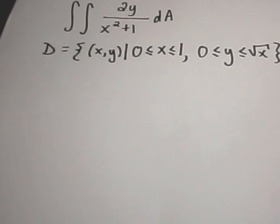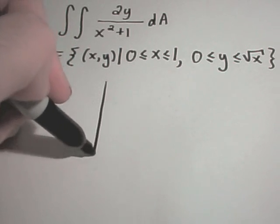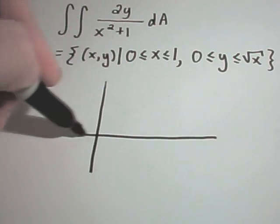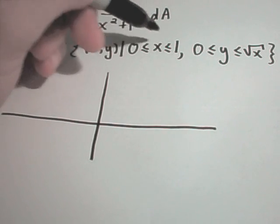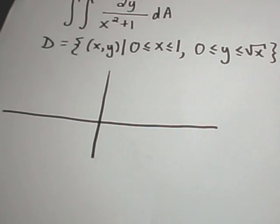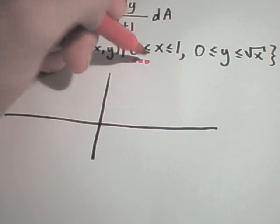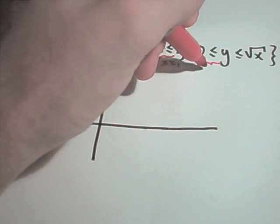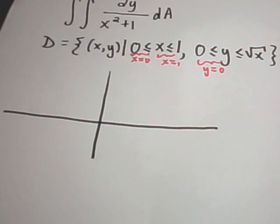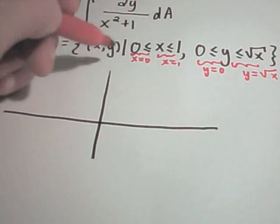The first thing you'll want to do in these problems is to simply sketch this region, because this is going to help you get your limits of integration. I usually think about x equals 0 and x equals 1 — I pretend they're not inequalities. So this gives me the line x equals 0 and this part gives me the line x equals 1. I'll do the same thing with the other one: y equals 0 and y equals square root of x.